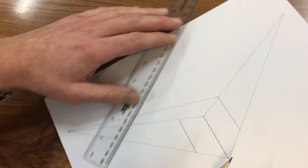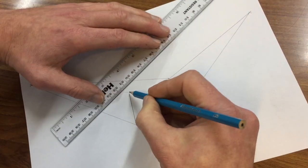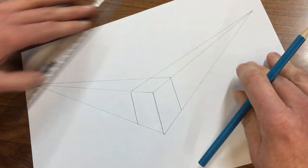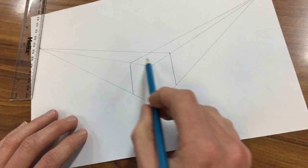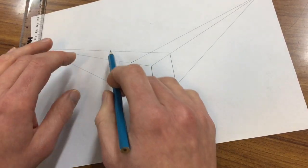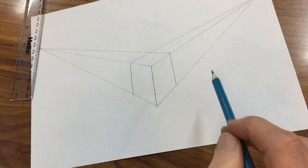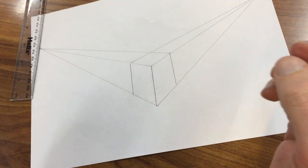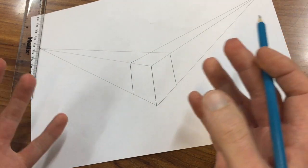The top of here across to the vanishing point. Now what that's created is a box, so I could actually erase these guidelines now and I end up with quite an accurate looking 3D box.